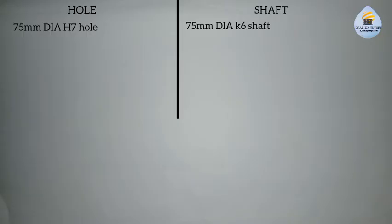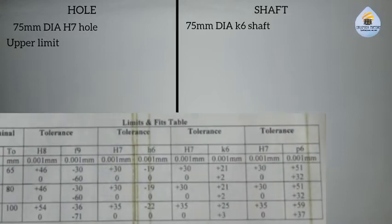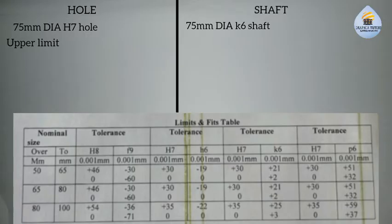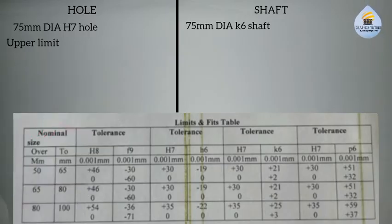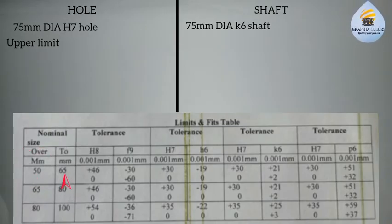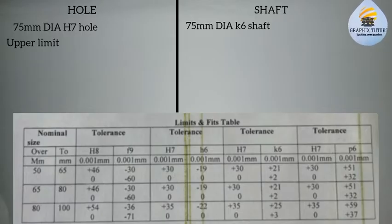We are looking for the limits of the hole and shaft, which are the upper limit and the lower limit. For the upper limit of the hole, we go to the tolerance table and check the nominal size. Since 75 falls between 65 and 80, we take the row for 65 to 80. We cannot take 80 to 100 because 80 is greater than 75.